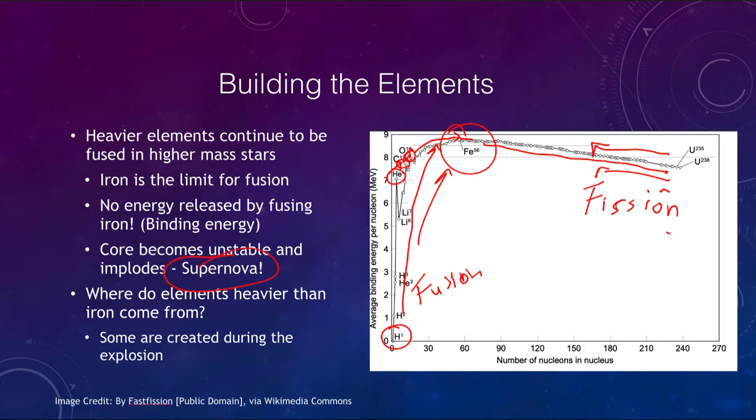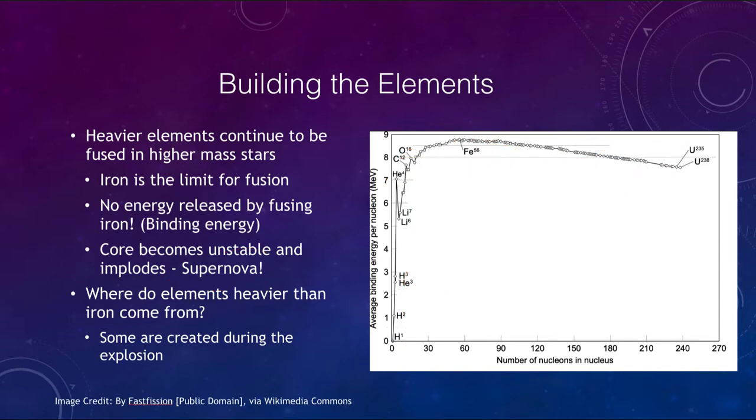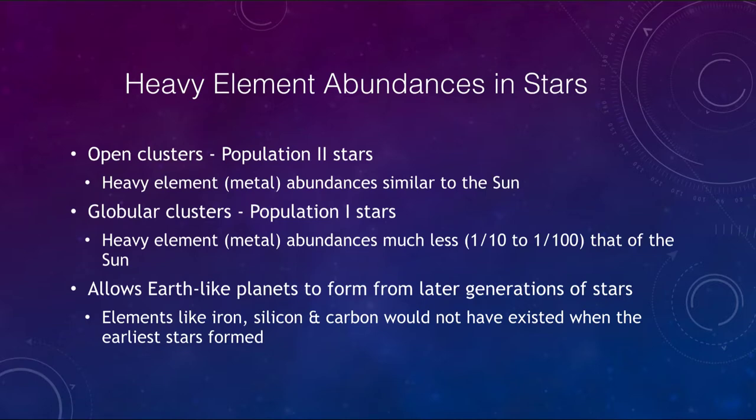Let's take a look at some of these heavy element abundances. We have what we call two different populations of stars: population two and population one stars. Population two stars are the older stars present in globular clusters, and they have very low heavy metal abundances—anything other than hydrogen and helium is much less, one tenth to one one hundredth what we see in the sun. We also see stars that have heavier element abundances similar to the sun, and those are the population one stars.